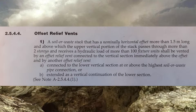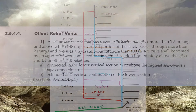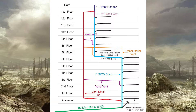Clause 2544: A Soil Away Stack that has a nominally horizontal offset more than 1.5 meters long, and above which the upper vertical portion of the stack passes through more than two stories, and receives a hydraulic load of more than 100 fixture units, shall be vented by an offset relief vent connected to the vertical section immediately above the offset, and by another offset relief vent: A) connected to the lower vertical section at or above the highest soil or waste pipe connection, or B) extended as a vertical continuation of the lower section. There's a lot to unpack there, so let's break this down.